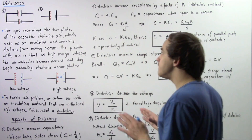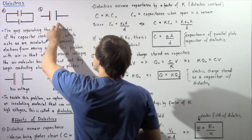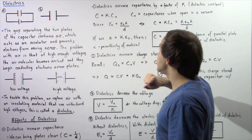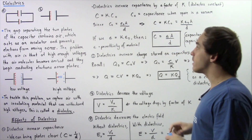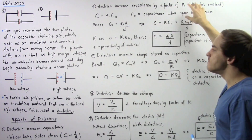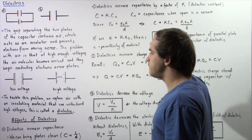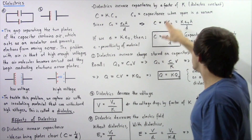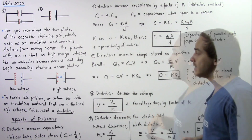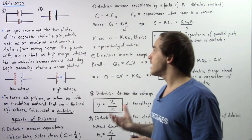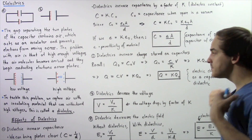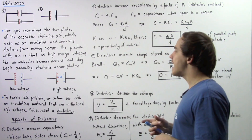Even if the distance between the two plates remains the same, the dielectric will still increase capacitance by a factor of K, which is usually determined via experiment. K is known as the dielectric constant and it depends on the type of substance being used, so different substances will have different K values.